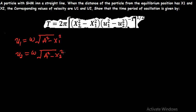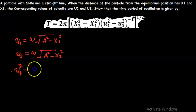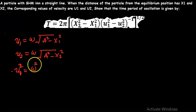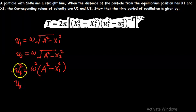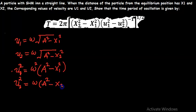The next thing we need to do here is to square both sides of the velocity equations. We get v1 squared equals omega squared times (A squared minus x1 squared), since squaring removes the square root. For the second one, v2 squared equals omega squared times (A squared minus x2 squared).